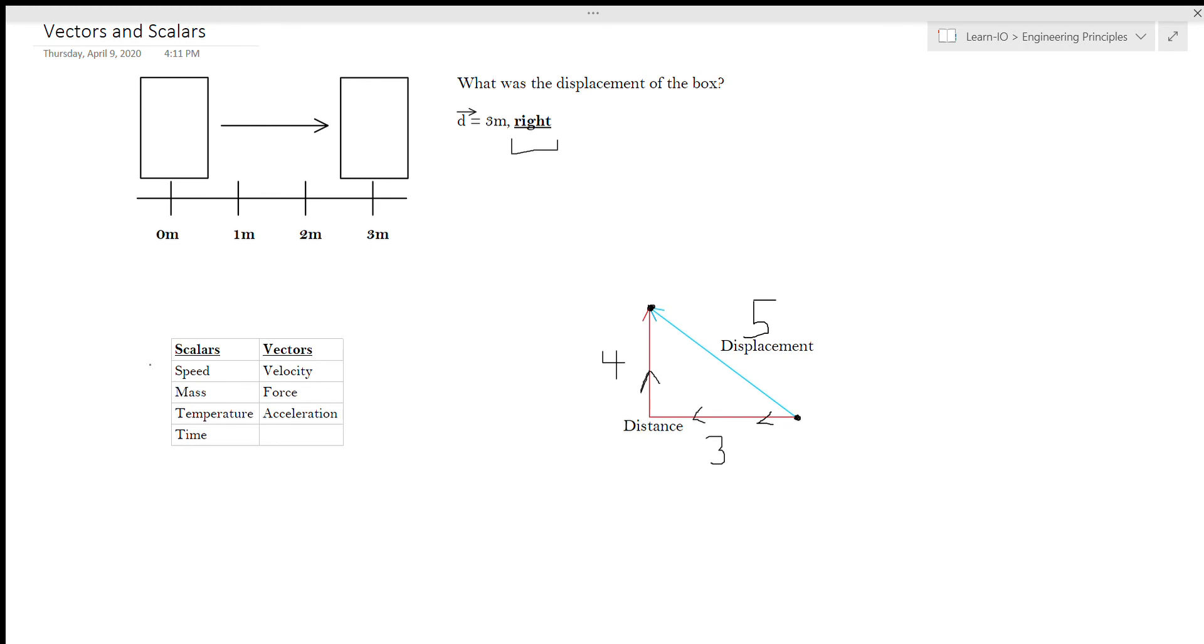So you might have noticed that we have both speed and velocity listed as different types of measurements or different types of quantities. And while a lot of people use these interchangeably in physics, they really aren't the same thing. Speed is exactly what you'd think speed is. It's just the number. If a car is moving at 60 miles per hour, its speed is 60 miles per hour.